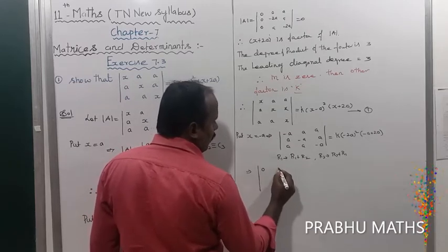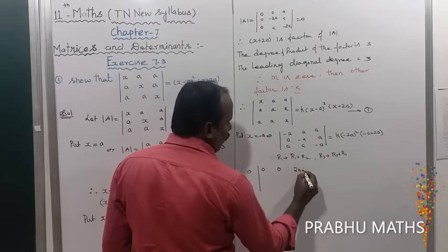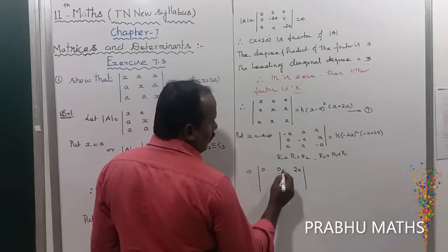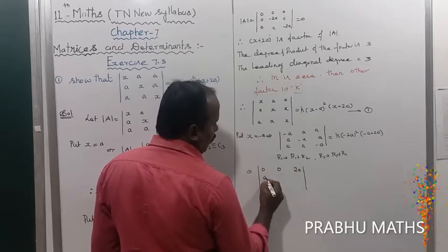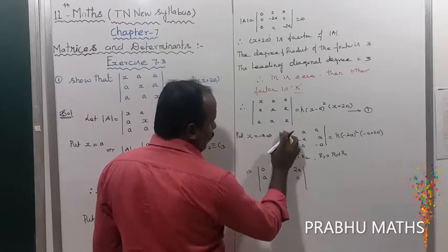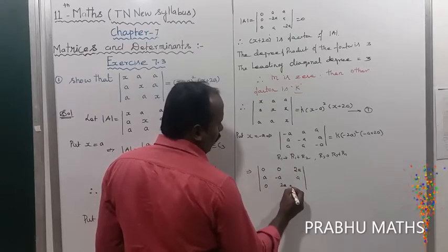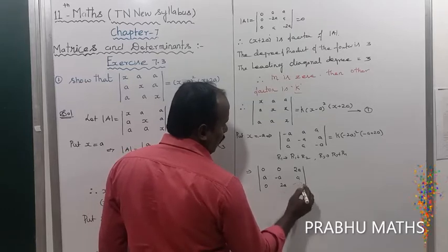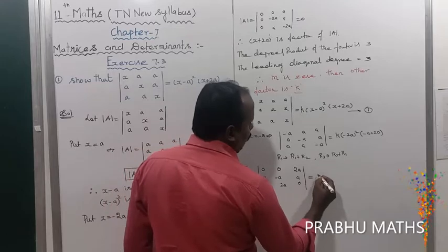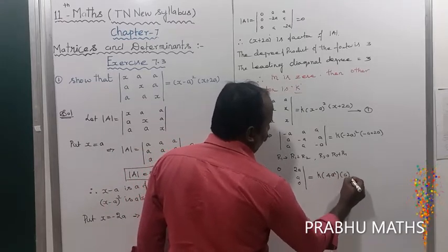After row operations, r1 gives 0, 0, 2a and r3 gives 0, 2a, 0. The resulting determinant after row operations has the first column fully zero except the remaining entries, giving a value of 2a squared.